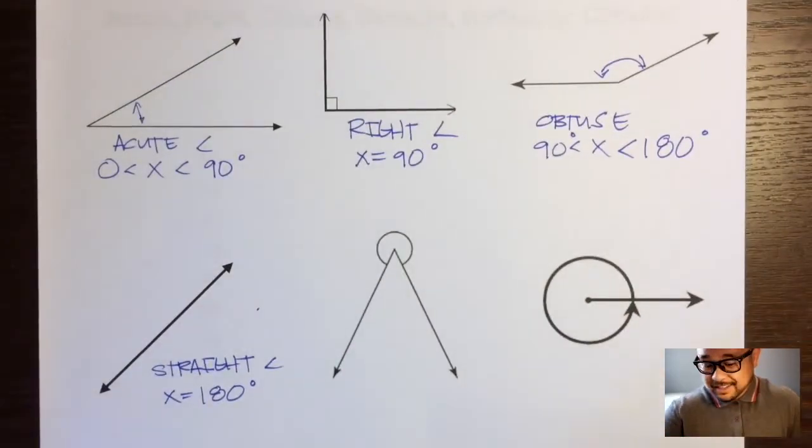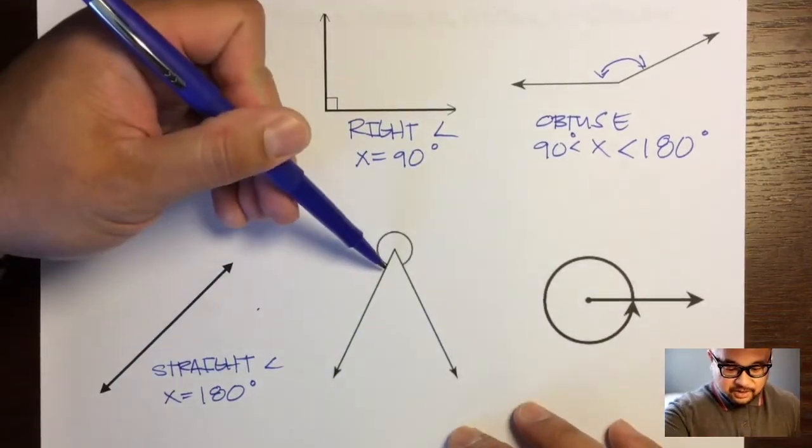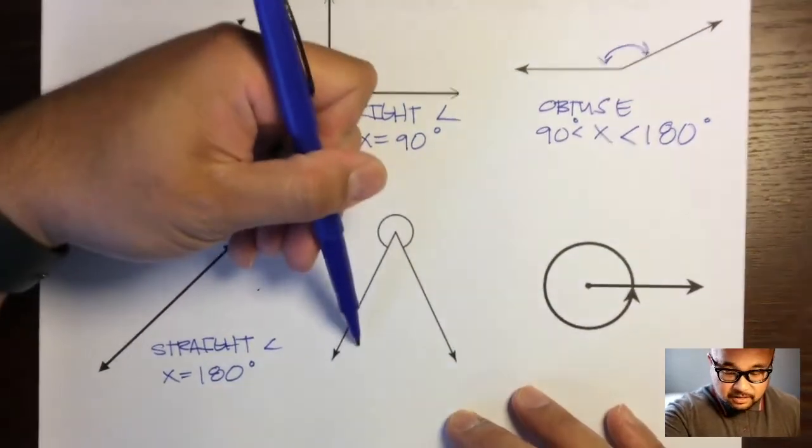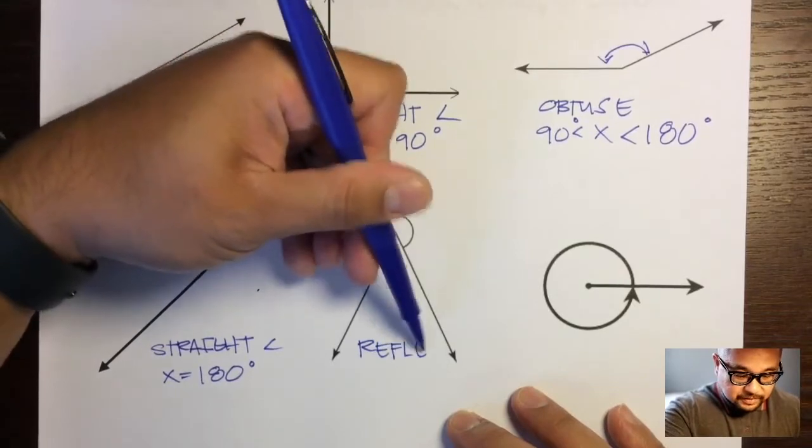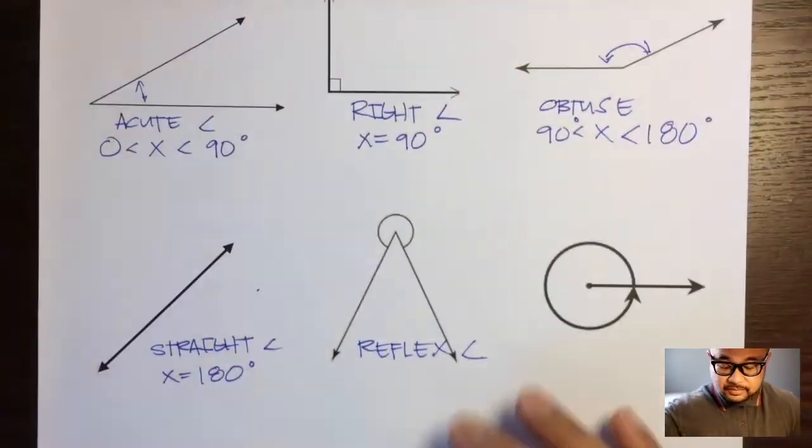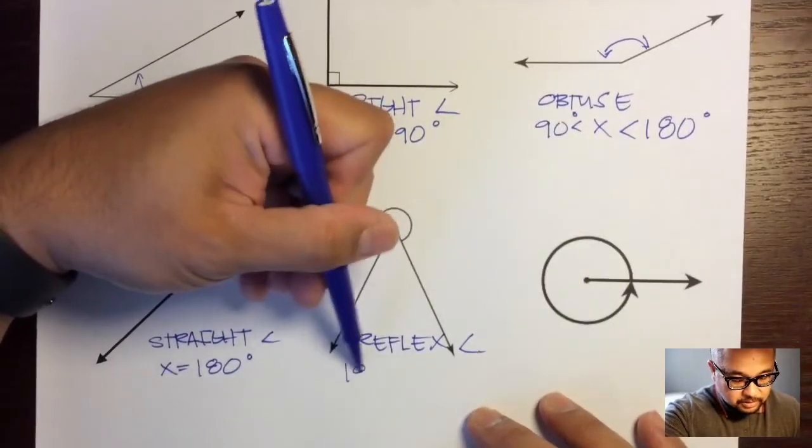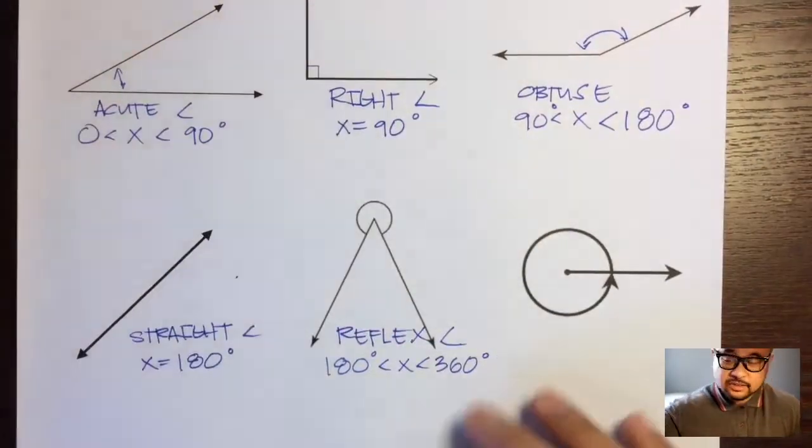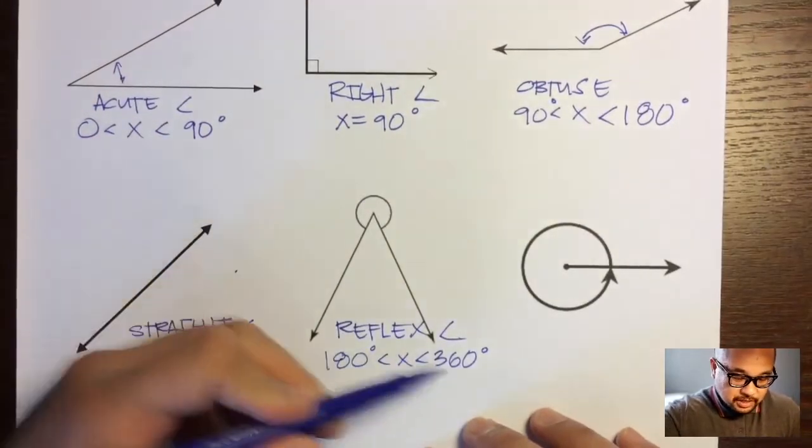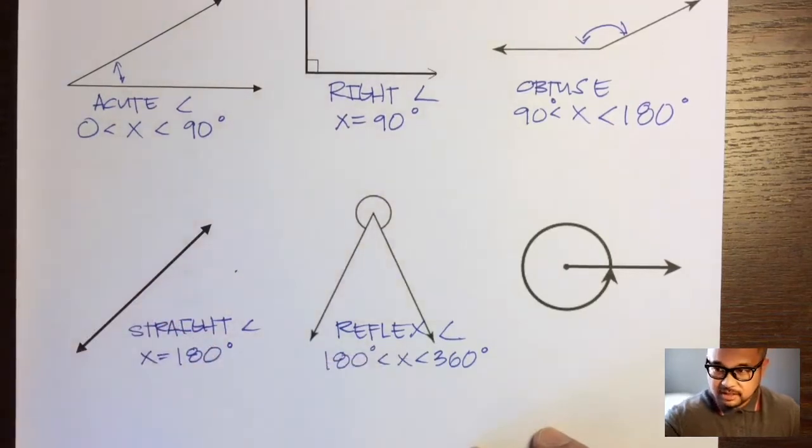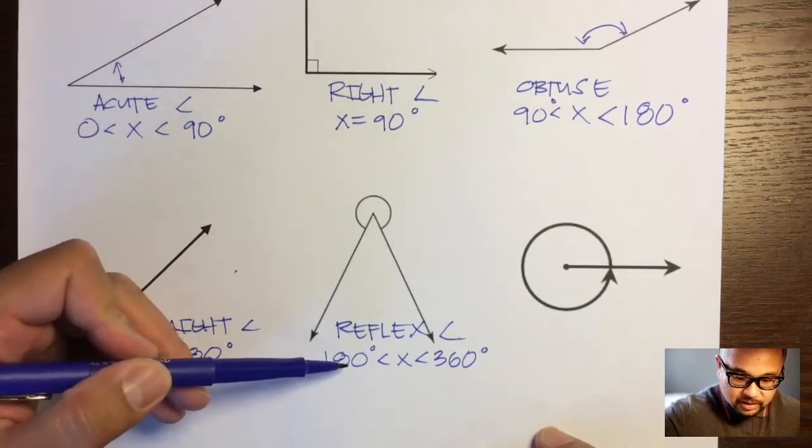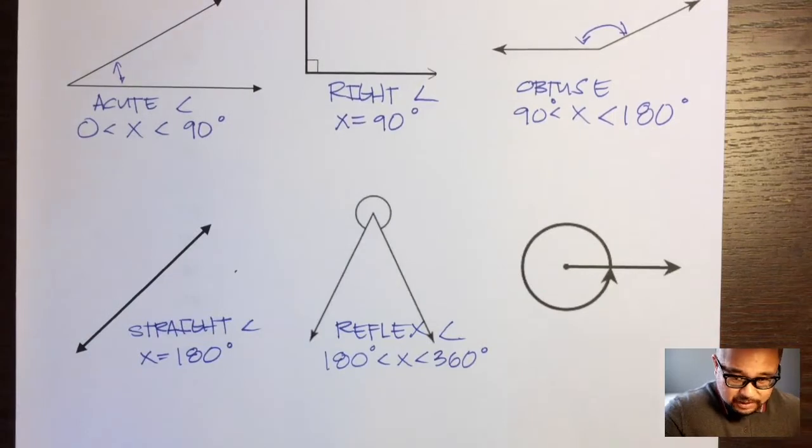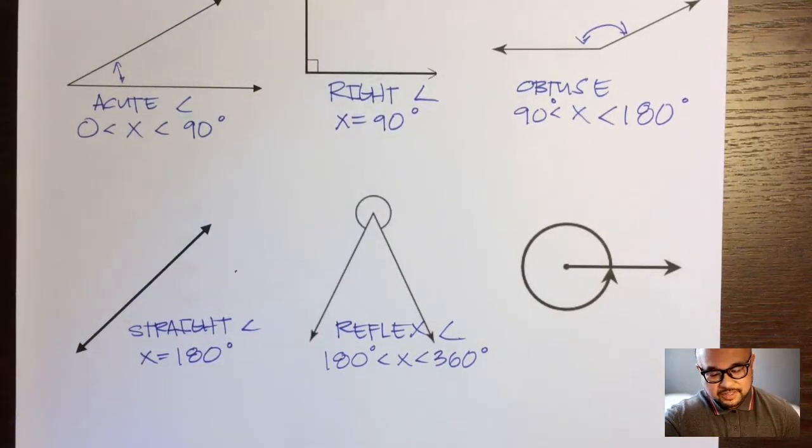This one right here is an angle that goes way further, rotates way further than 180 degrees. This is called a reflex angle. A reflex angle is greater than 180 degrees but less than 360 degrees. So it's in between 180 and less than 360 but not equal to these numbers. So it could be 180.1, 180.0001 or it could be 359.99999 with the bar. So that's a reflex angle.